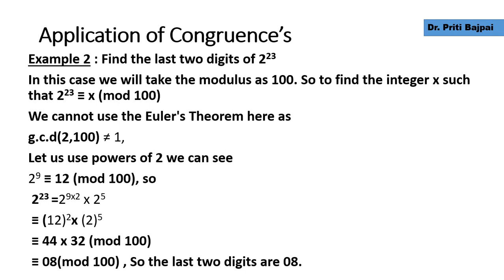Let's see another example: find the last two digits of 2 to the power 23. Again the modulus is 100, so we need 2^23 ≡ x mod 100. We cannot use Euler's theorem here because gcd(2, 100) is not 1. So we try powers of 2. We find that 2^9 ≡ 12 mod 100. Then 2^23 can be written as 2^9 × 2^9 × 2^5.